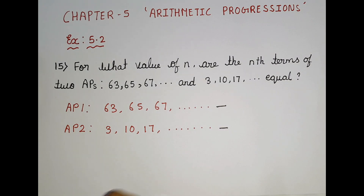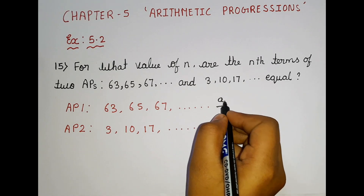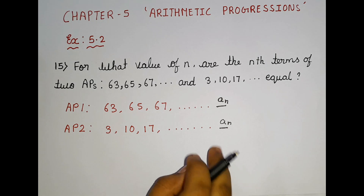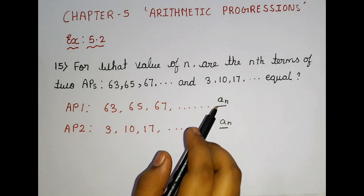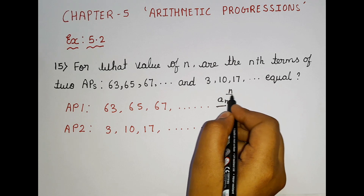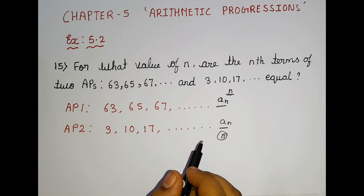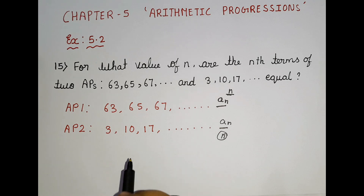Since you guys know, whenever we don't know which number that is, we just take it as n. If you don't know a number which will come after a lot of terms, then you are supposed to take it as n. In this question, we don't know the number as well as the nth term. So we are supposed to find it.